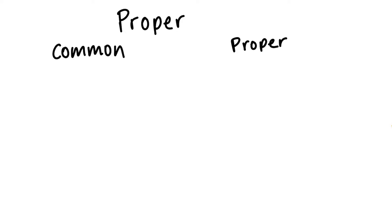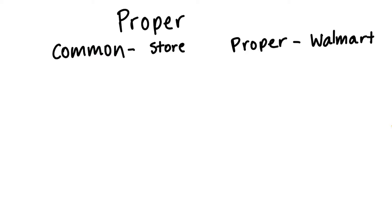Remember that a common noun is a person, place, thing, or idea that does not have a specific name. A proper noun is a person, place, thing, or idea that has a specific name. For example, a common noun could be 'store,' and a proper noun would be 'Walmart.' The common noun is just a word that's not specific, and a proper noun is the name of a specific place.